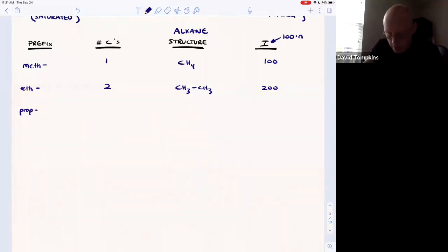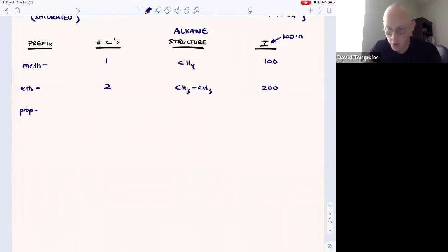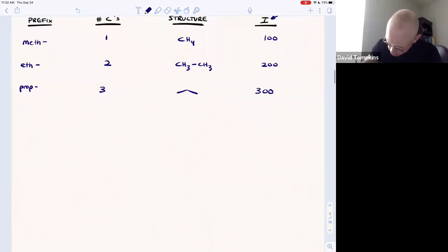A three carbon chain has prefix prop. So this is a CH3 and a CH2 in the middle and then another CH3, with an index of 300. Four carbon compounds, but for example, would have four carbons in a row, one, two, three, four, and that would have a Kovats index of 400.